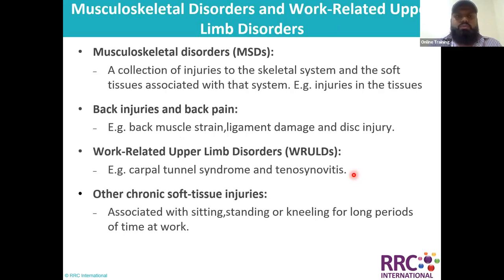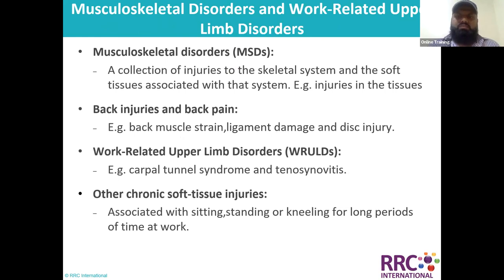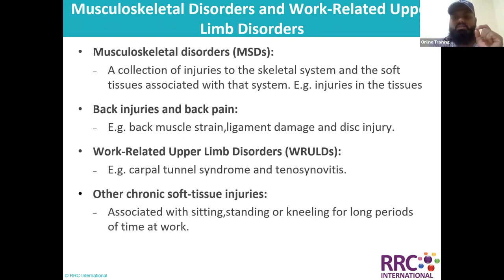When we talk about work-related upper limb disorders, we can also call them musculoskeletal disorders. During your work, you can overload your body leading to injuries to muscles, ligaments, tendons, and bones, resulting in strains and sprains — we call these musculoskeletal disorders. A ligament is the tissue which binds the muscle with bone.